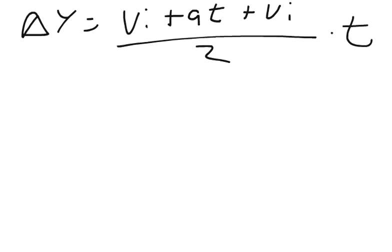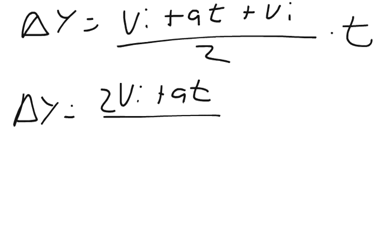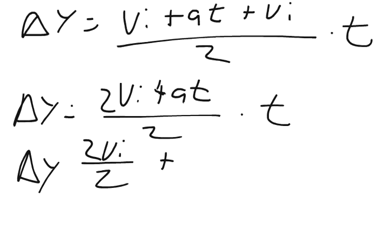So at this point we have our change in y equals the initial velocity plus at plus the initial velocity over two times time. We can group the initial velocity together and we end up getting the change in y equals two times the initial velocity plus at over two times t.